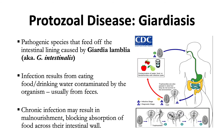The next protozoal disease is giardiasis, caused by Giardia lamblia. This infection occurs from eating food or drinking water contaminated by cysts, which are a very resistant form usually passed in the feces. Chronic infection may result in malnourishment by blocking absorption of food across the intestinal wall. Infection occurs by ingestion of cysts; in the small intestine, excystation releases trophozoites — each cyst produces two trophozoites, which multiply by longitudinal binary fission in the proximal small bowel.